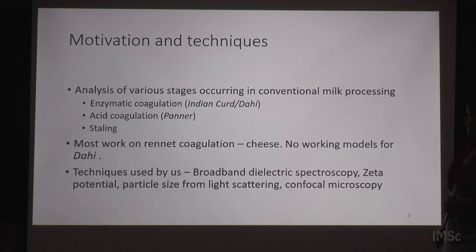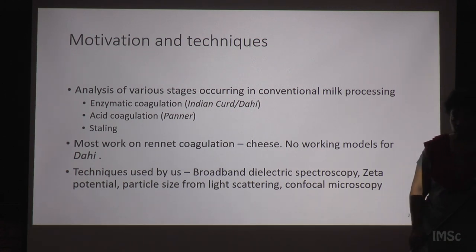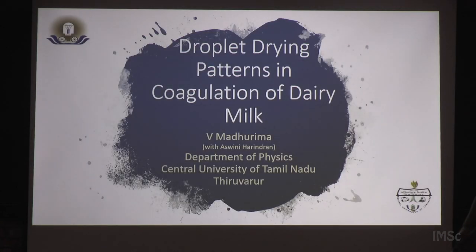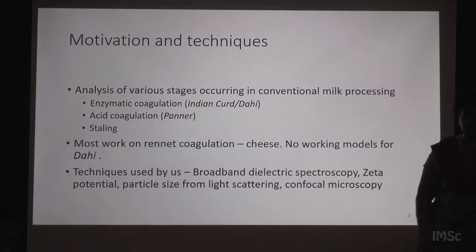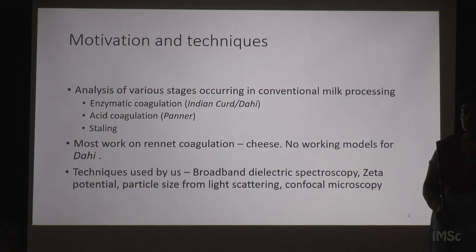The various processes we wanted to look at are enzymatic coagulation — the equivalent of rennet coagulation for cheese — but anyone who has had cheese and curds knows these end products are not the same. We also look at acid coagulation and staling. We started by looking at broadband dielectric spectroscopy, which is a very sensitive tool to the amount of water present in any material. In addition, we looked at particle size and zeta potentials, since coagulation involves changes in particle size and pH.